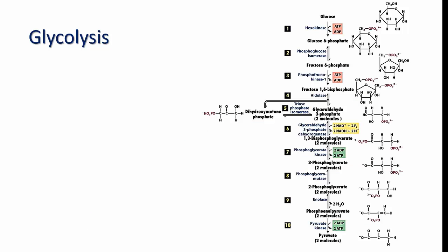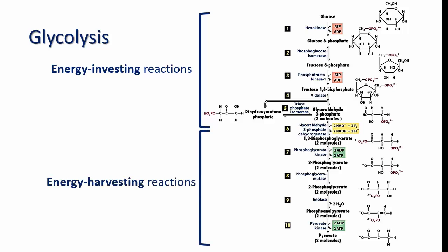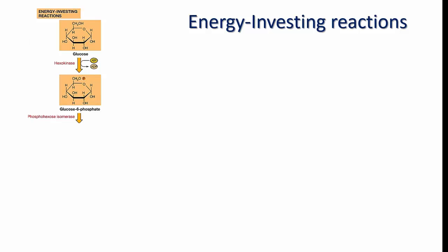Glycolysis refers to the lysis, or breakdown, of a glucose molecule — which is a 6-carbon sugar — into two molecules of pyruvate, each consisting of a 3-carbon compound. This breakdown is the end result of 10 reactions that all occur in the cytoplasm. These 10 reactions can be divided into two glycolytic stages: the energy-investing stage and the energy-harvesting stage. The energy-investing reactions use ATP, while the energy-harvesting stage produces ATP.